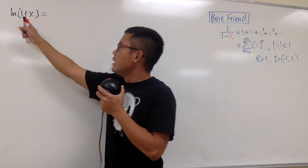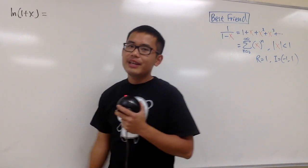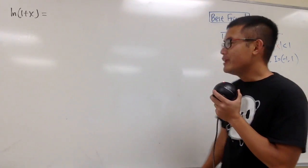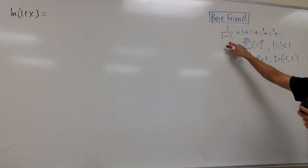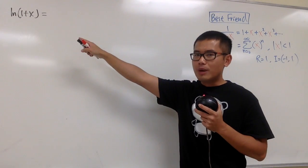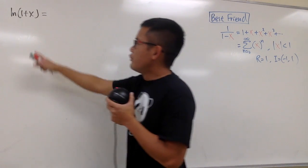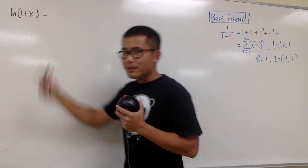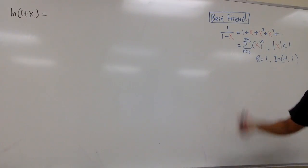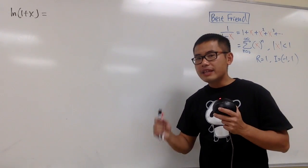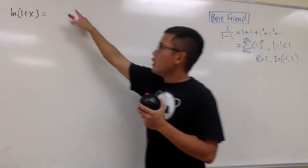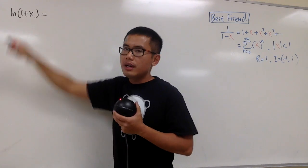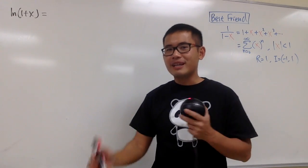We're going to find the power series expansion for the function ln(1+x). Just like in the previous video about finding the power series for inverse tangent x, we are going to ask ourselves: is there any connection between our best friend and ln(1+x)? Well, if we differentiate this, we get 1 over 1 plus x, which looks really similar to our best friend. So the strategy is to find a power series for 1 over 1 plus x, and then integrate that to get ln(1+x).